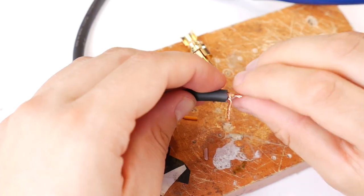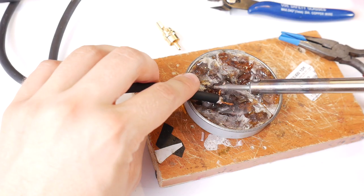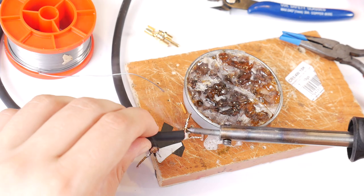Prepare the other end of the cable for soldering. Tin both wires: the gold color ground wire and the center wire.